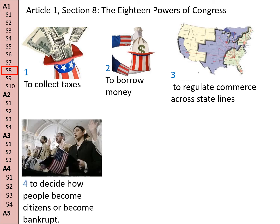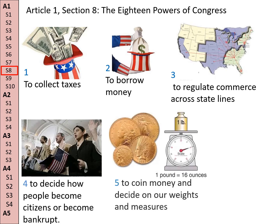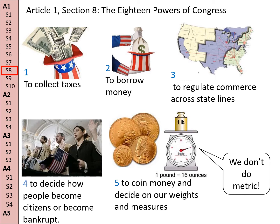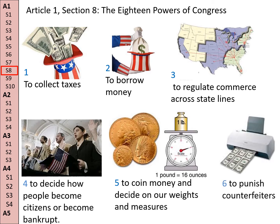Power number four: they have the power to decide how people become citizens and how people become bankrupt. Power number five: they get to make the money and decide about our weights and measures. This is why we don't do metric — it would take an act of Congress to make us metric.